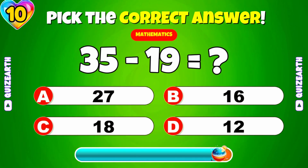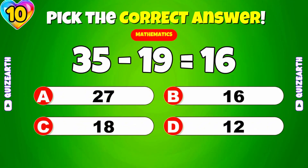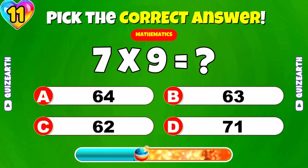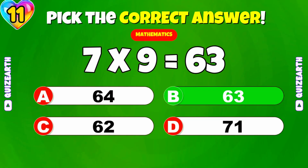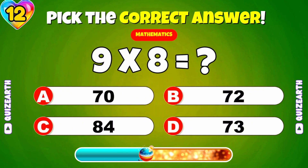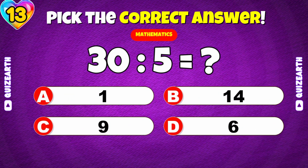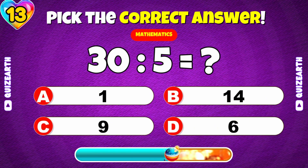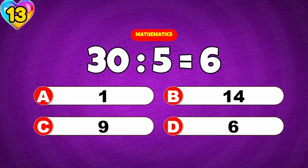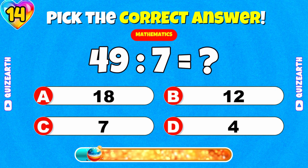What is 35 minus 19? 16. What is 7 times 9? 63. What is 9 times 8? 72. What is 30 divided by 5? 6. What is 49 divided by 7? 7.